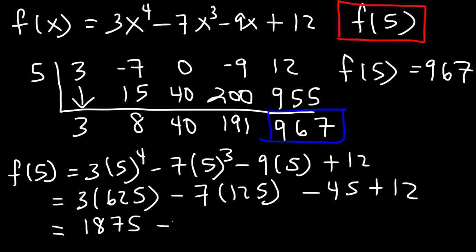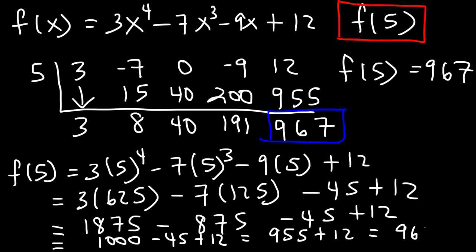Now, 7 times 125. 7 times 100 is 700. And 7 times 25. If you have 7 quarters, that's $1.75. So that's 175. So 700 plus 175 is 875. Now, 1875 minus 875. We can cancel the 875s and that becomes 1,000. And we know that 1,000 minus 45 is 955. And 955 plus 12 is 967. So we get the same answer. So therefore, f of 5 is equal to 967.